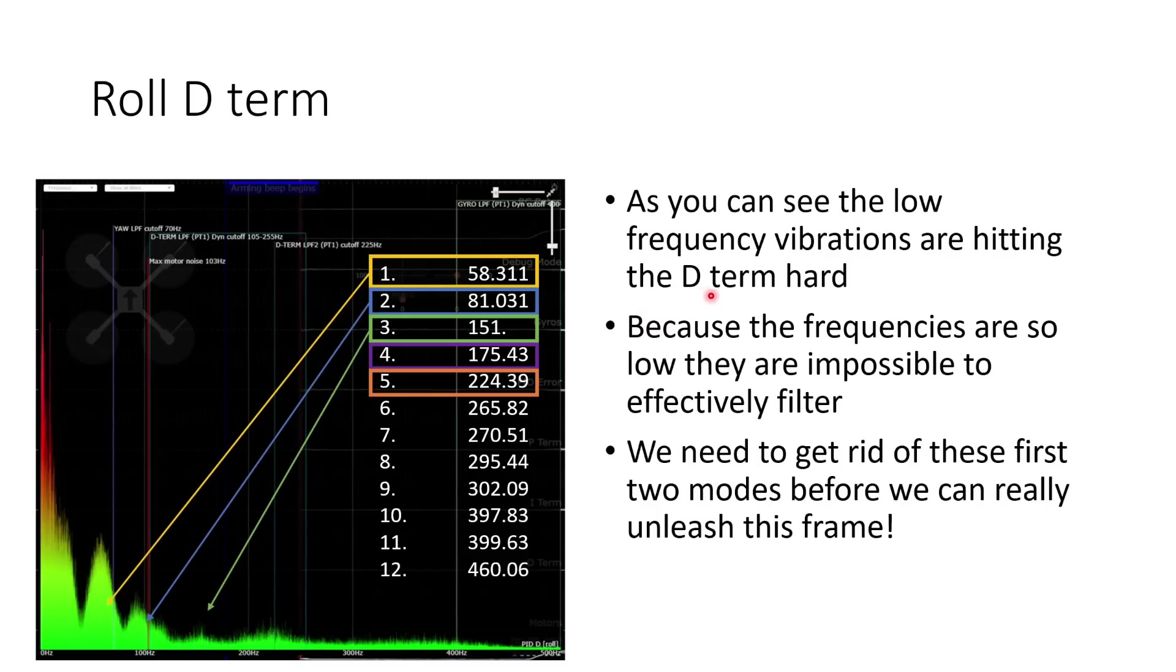So as we can see, these low frequency vibrations are really hitting the D term hard. And because the frequency is so low, they're really impossible to effectively filter because 58 Hz and 81 Hz are frequencies very similar to what you might expect for prop wash and other aerodynamic effects of that nature. So you really want to be sensitive to those frequencies, and you really don't want any noise at those frequencies. So in order to really improve the performance of this quad, we need to get rid of these first two modes before we can really unleash the full performance of the frame.